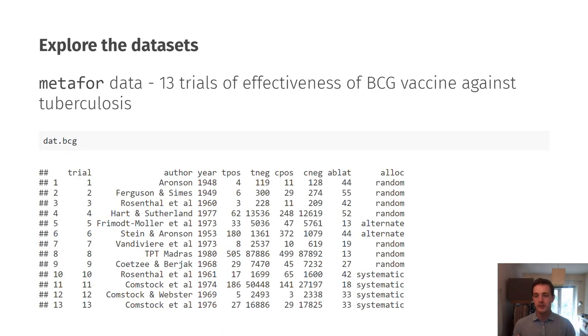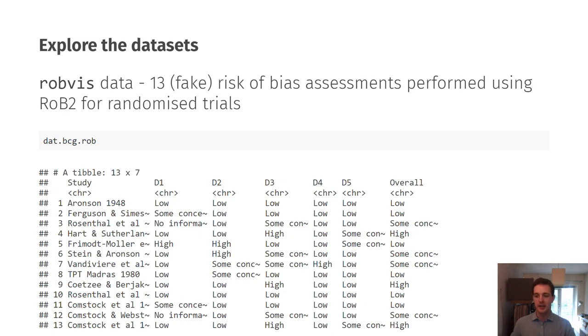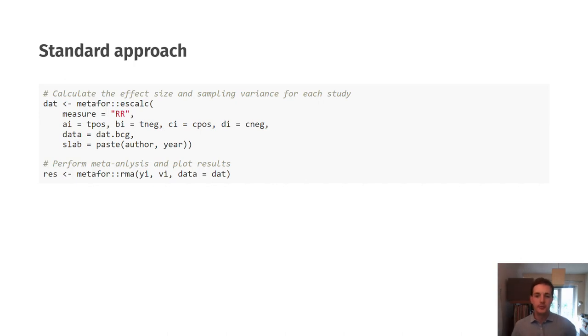I'm going to talk you briefly through the two data sets we use in our example. The first one is a Metafor example data set and it's a set of 13 studies looking at the effectiveness of BCG vaccine against tuberculosis. Similarly on the other side we have risk of bias assessments for each of those 13 studies. Just to note that these are fake risk of bias assessments, they're purely for illustrative purposes and I'm saying nothing about the quality of the studies because I haven't looked at them myself.